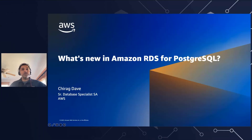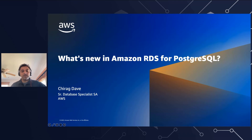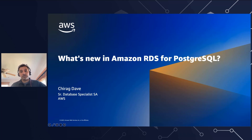Welcome and thanks for joining me. My name is Chirag Daveh, I'm a Senior Database Specialist Solution Architect here at AWS. Today we will be talking about what's new in Amazon RDS for Postgres. Amazon Relational Database Service, or Amazon RDS for Postgres, makes it easy to set up, operate, and scale fully managed Postgres in the Cloud. We'll talk about some of the key innovations we have done in the recent past, and some of the improvements in the recent version of Postgres.